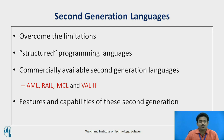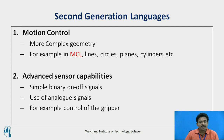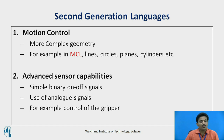The features and capabilities of second generation languages include motion control, which is basically the same as for first generation languages, but goes beyond the previous generation by including more complex geometry problems than straight line interpolation. For instance, MCL includes many of the geometric definition features contained in APT, such as lines, circles, planes, and cylinders.